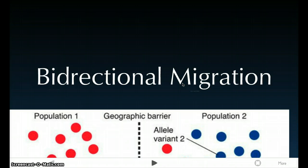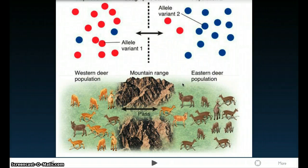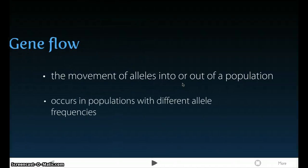It's not just when one population goes somewhere — it goes in both directions, which is shown by this picture. You can see how the eastern deer population and the western deer population mix, and it's not just the eastern deer population going west — it usually goes both ways. This movement of alleles into and out of a population is known as gene flow, and this occurs in populations with different allele frequencies.